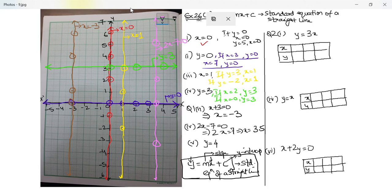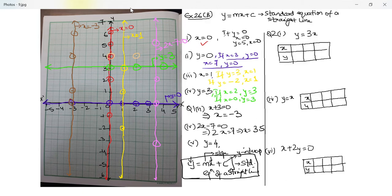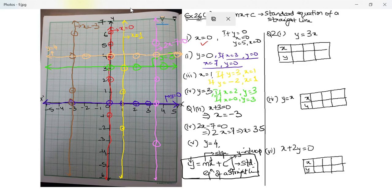The last one here is y equal to four. When y is four, whatever be the value of x, y remains four. I draw a line parallel to the x-axis passing through y at four, and this is the line y equal to four.